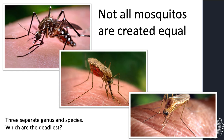Not all mosquitoes on the planet are created equal. Some don't hurt humans at all. Some prefer to eat bird blood or other animals. Some do like humans. Here are three different genus of mosquitoes — any idea which are the deadliest?